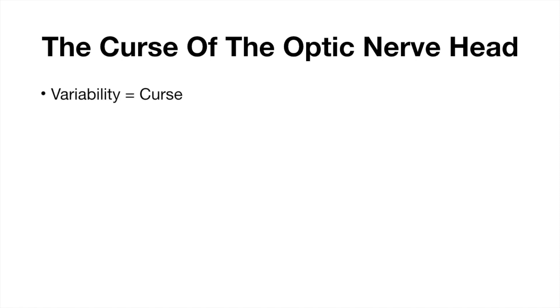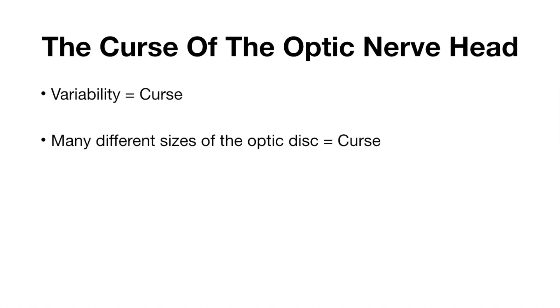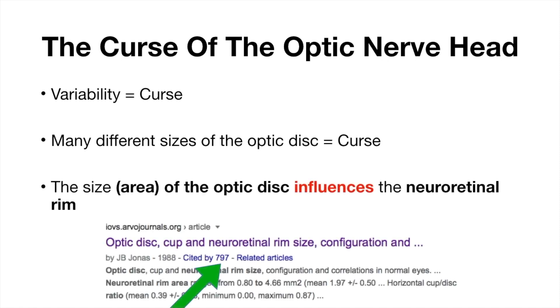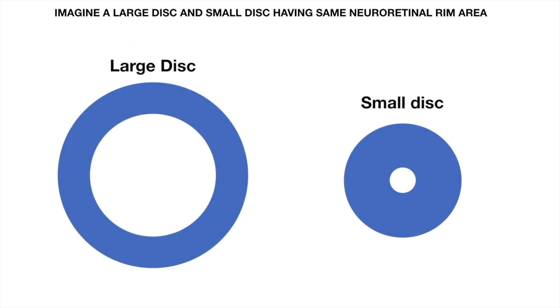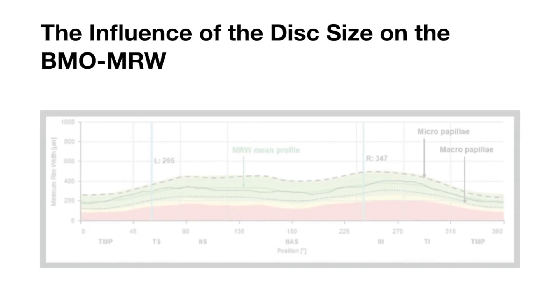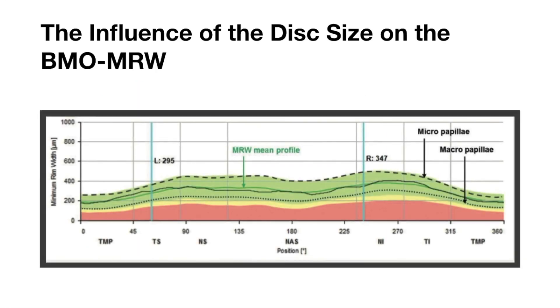The challenge of optic nerve width is its variability, as many different disc sizes exist. The size of the optic disc influences the neuroretinal rim size. For example, a large disc and a small disc with the same neuroretinal rim area will differ: the large disc will still have a small BMO MRW and the small disc will still have a large BMO MRW. The influence of disc size on BMO MRW must be kept in mind during interpretation.